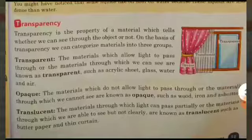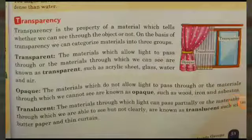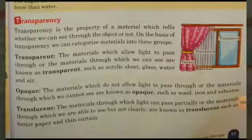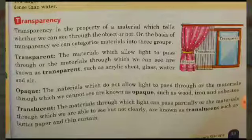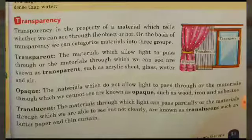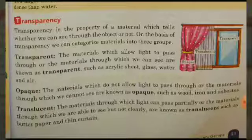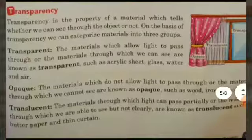Next property is transparency. Transparency is the property of a material which tells whether we can see through the object or not — whether light passes from one side to the other through an object. On the basis of transparency, we can categorize materials into three groups depending on how much light passes through them.